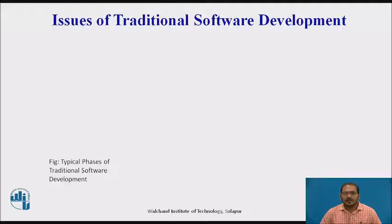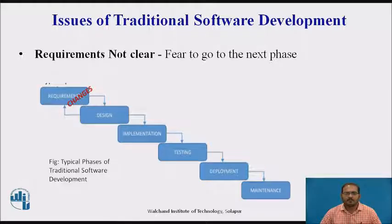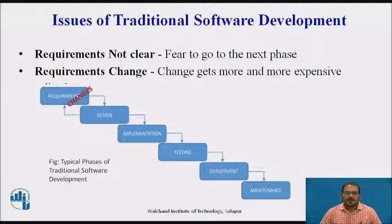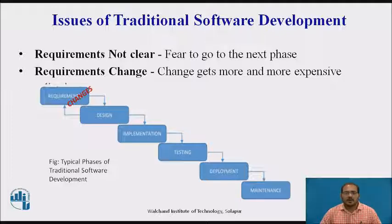Let me go through the list of issues. The most common problem in traditional software development is unclear or ambiguous requirements — almost everybody complained about this. The second issue is requirement change: customers change their mind halfway through the development life cycle. You may already be in the coding phase when the customer comes up with completely new requirements, so requirements change during the development life cycle after the requirement phase.